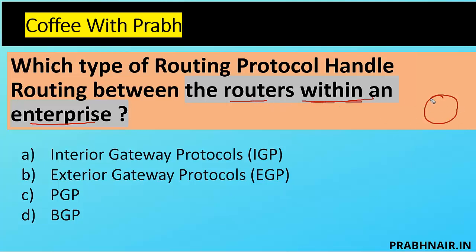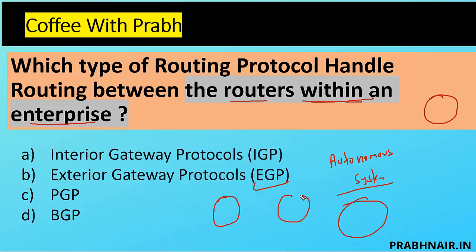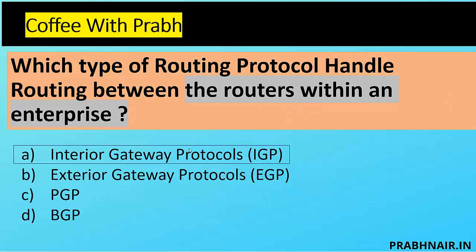The question specifically talks about routing between routers within an enterprise — within the organization. IGP handles routing within the autonomous system, which is basically happening within the enterprise. In other words, IGP routes traffic between routers within the enterprise, whereas EGP controls routing outside an autonomous system. BGP is part of EGP, so it's removed. The answer is IGP — Interior Gateway Protocol — because it is used within the enterprise.